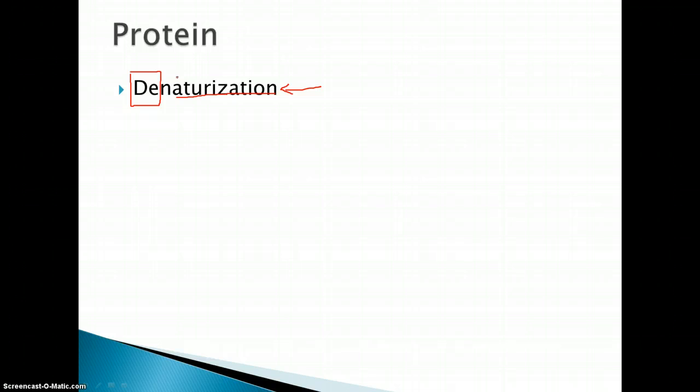That's how I think of the word denaturation, and it gives me a clue what happens. So what exactly happens is that, let's say here we have a protein. We'll make it three-dimensional. So here's a protein.